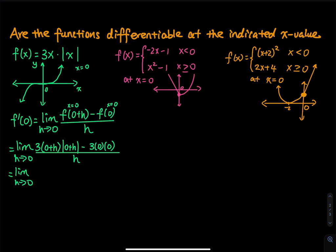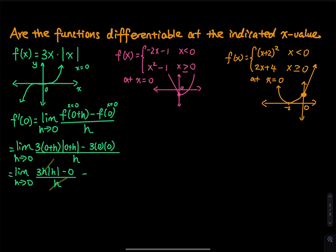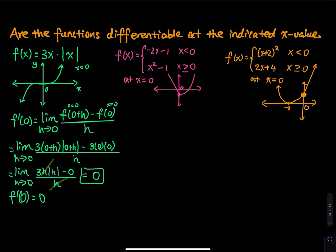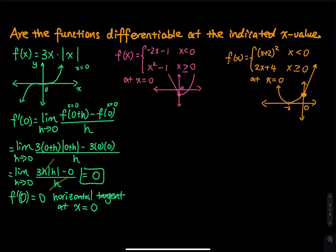So we have the limit as h goes to 0 of 3 times h times absolute value of h minus 0, divided by h. We can make a cancellation — after canceling the two h's, we are able to plug in 0. Once you plug in 0, you have 3 times absolute value of 0, which equals 0. So f prime of 0 equals 0, meaning we have a horizontal tangent at x equals 0. Since the slope is defined, f is differentiable at x equals 0.